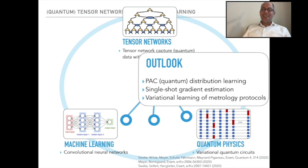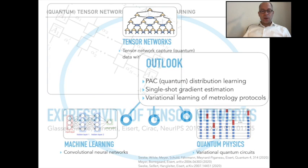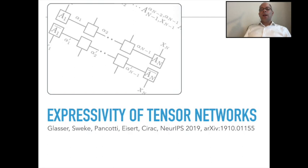I will say a few words more on the quantum side of things when we hint at PSE quantum distribution learning, single shot gradient estimation, and the variational learning of quantum metrology protocols. This is our plan — we are all set. And we will start with looking at the expressivity of tensor networks in probabilistic modeling.